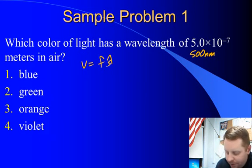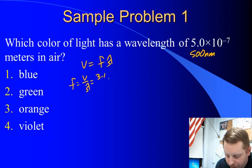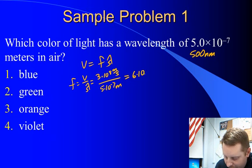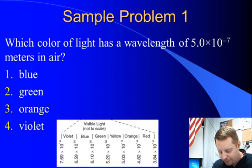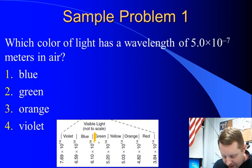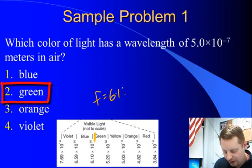If V equals F lambda, frequency then must be the velocity over the wavelength, or 3 times 10 to the 8th meters per second over 5 times 10 to the minus 7 meters, which will come out to be about 6 times 10 to the 14 hertz. If we look that up on the electromagnetic spectrum, 6 times 10 to the 14 hertz falls right in here on the green. Therefore, our answer must be green.